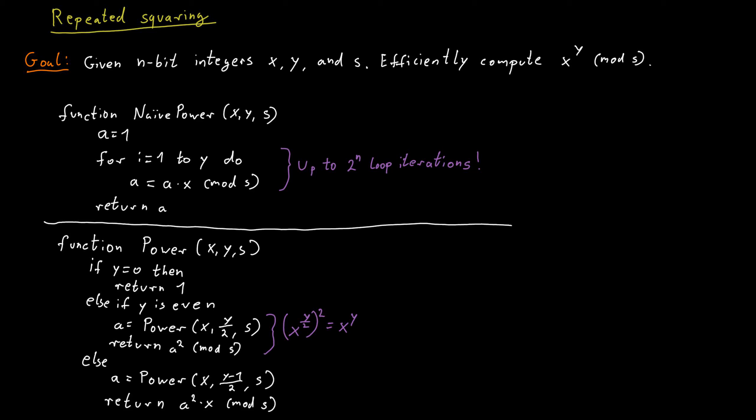I hope again that you agree that this is correct. If we take x times x to the power of y minus 1 divided by 2 squared, that's exactly the same as x to the power y.